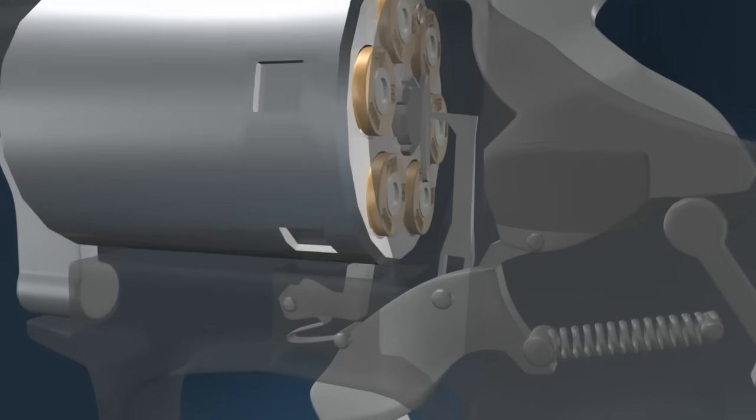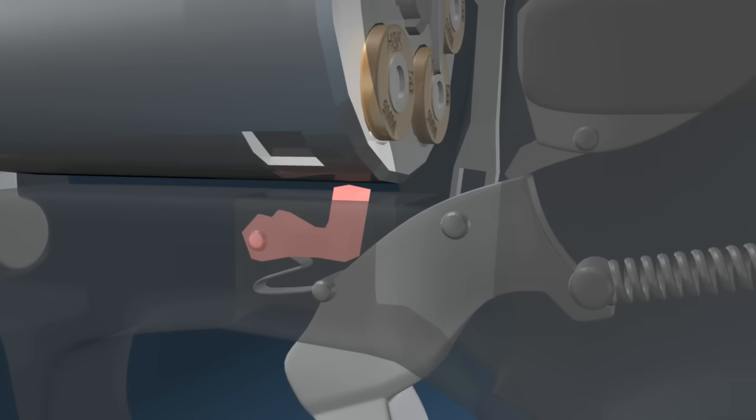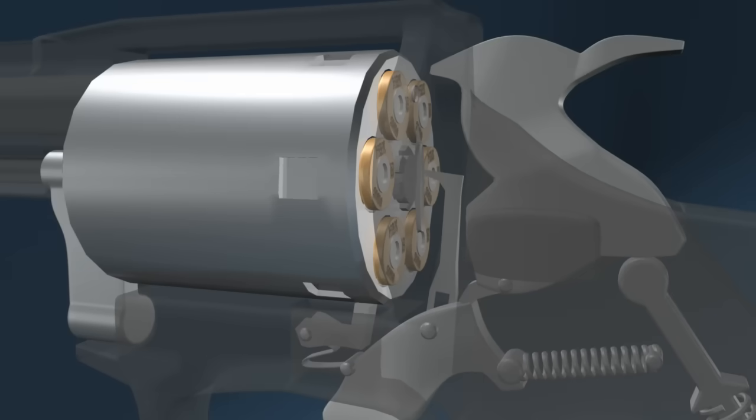Another pawl lodges in a small depression on the cylinder. This stops the cylinder in a particular position so it is perfectly lined up with the barrel.